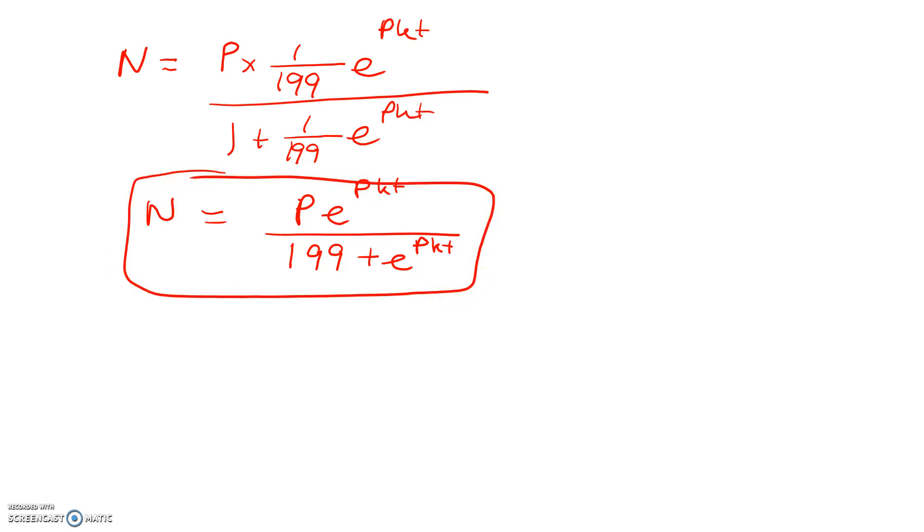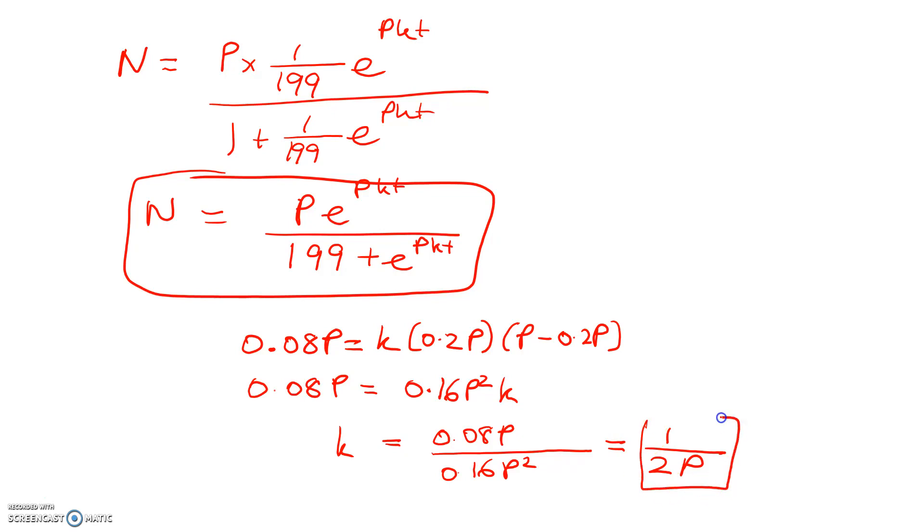Now we move to the second part, which is using the DE to say that 0.08P equals K times 0.2P times P minus 0.2P. If you're forgetting where that came from, that was from my initial DE. Cleaning that up gives me the stuff that appeared on the screen. Now we've got K figured out and we can substitute K into here. That's going to finally give me an expression for N that doesn't have A and doesn't have K.